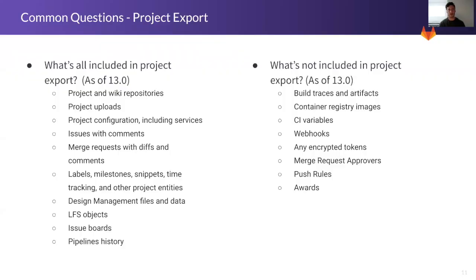What's included in the project export as of 13.0? This covers project and wiki repositories, project uploads, configuration, issues with comments, merge requests with diffs and comments, project entities including labels, milestones, snippets, time tracking, design management files and data, LFS objects, issue boards, and pipeline history. What's not included? Build traces and artifacts, container registries and images, CI variables, and so on. The items not included can be filled in using the available APIs.